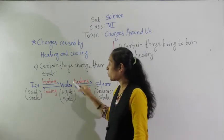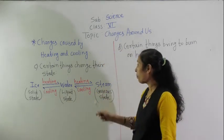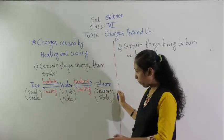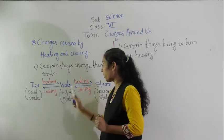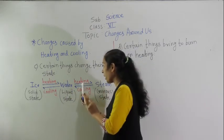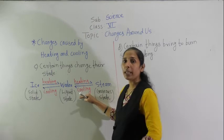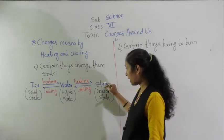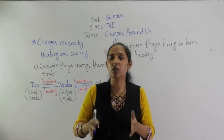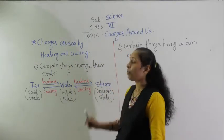On cooling, the liquid state converts into the solid state — so water converts back into ice. Looking at the diagram: heating takes ice → water → steam, and cooling reverses this — steam converts into water, and water converts into ice. In this way, we can bring changes to the states of matter through heating and cooling. This covers the point: certain things change their state.